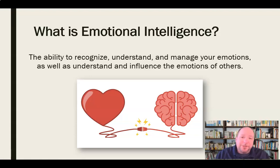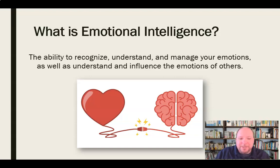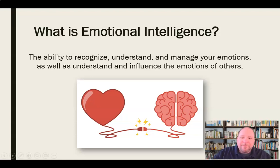Emotional intelligence is the ability to recognize, understand, and manage your emotions, as well as understand and influence the emotions of others. Within this, it's important that we be able to know our own emotions, to recognize and manage those emotions, and then to motivate ourselves using those emotions to perform whatever task we need to complete. We also need to be able to recognize and understand the emotions of others, as well as manage those relationships — not about controlling other people, but helping them to process and understand their own emotions as well.